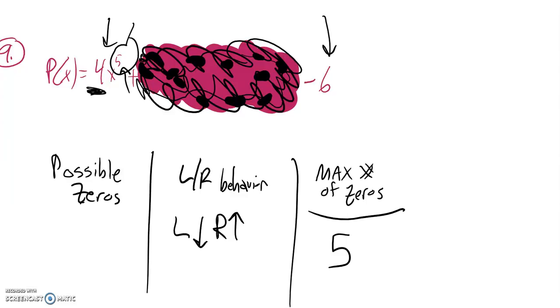Now if I list all the possible zeros, I know that possible zeros are factors of the last term divided by that leading coefficient. So plus or minus, factors of 6 are 1, 2, 3, and 6. Factors of 4 are 1, 2, and 4.